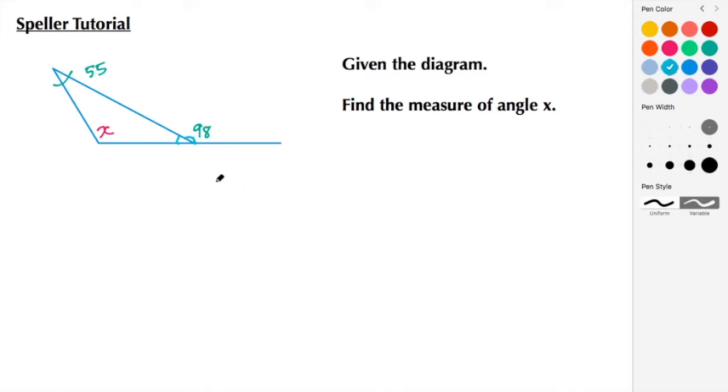All right, let's begin by working with a linear pair. Because we know a linear pair forms a straight line, and we know a straight line has a measure of 180 degrees. So here we're going to take 180 and we're going to subtract off the 98.